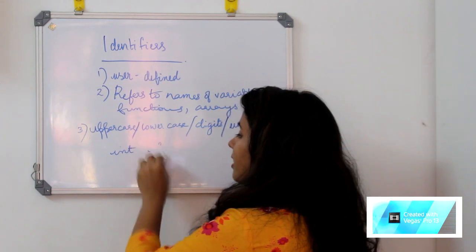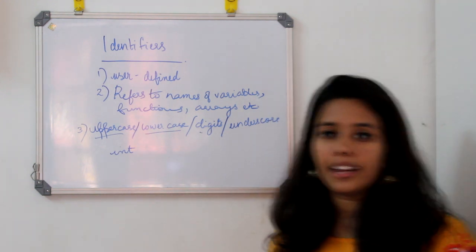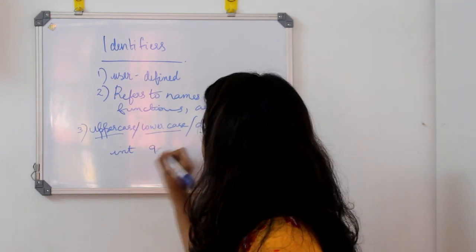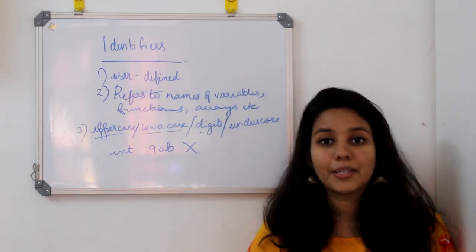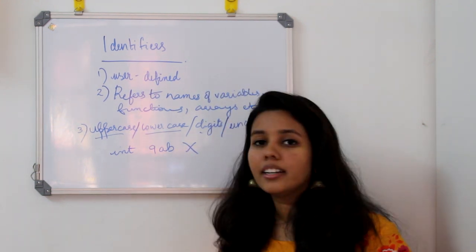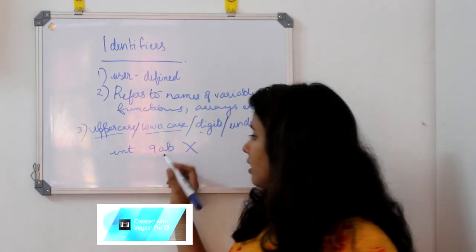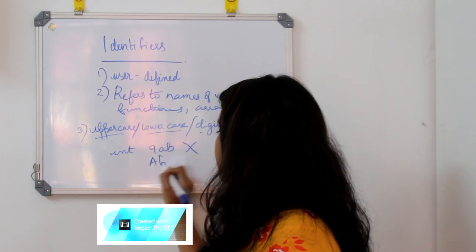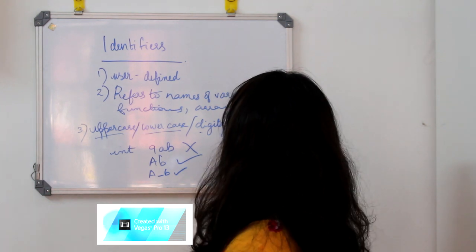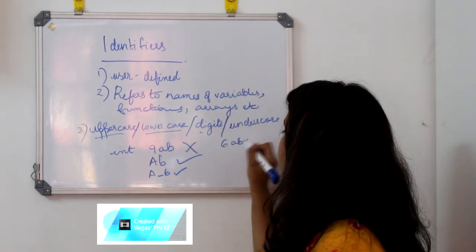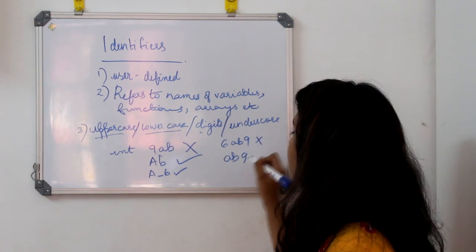This is the identifier form. The starting letter must be uppercase or lowercase — it cannot be a digit. For example, int 9ab would produce an error. The identifier's beginning letter must be a letter, not a number. A or B followed by numbers is correct — for example AB9 is valid, but 6AB9 is not.